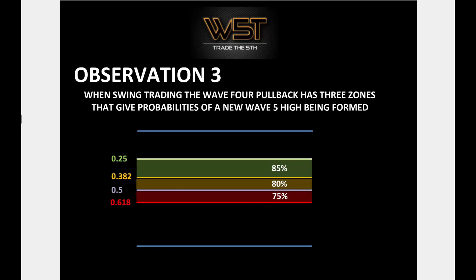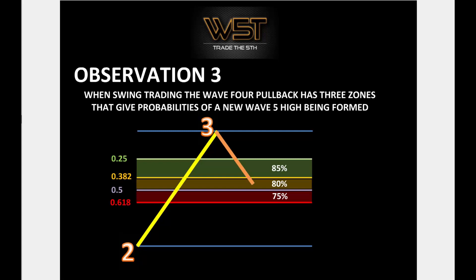Observation three: when swing trading, the wave four pullback has three zones that give probabilities of a new wave five high being formed. These zones are pre-programmed and automatic in the indicator suite. The green zone: if wave four finds support there on a bullish move and starts to move away, there's an 85% probability it will go on and make a new wave five high. The amber zone: if it pulls back there, finds support, and moves back in the direction of the main trend, there's an 80% probability.